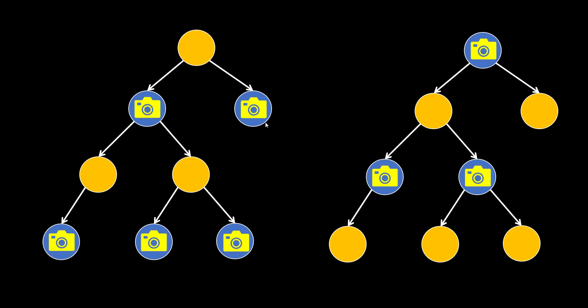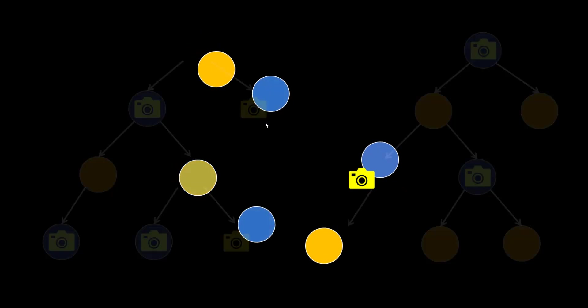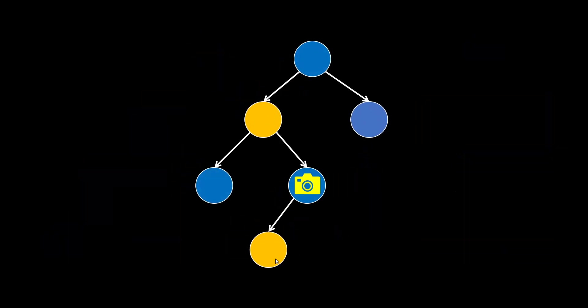Now that we know we are going to start from the bottom, let's see how. We add a camera for a particular node which covers its child and the parent. We need to store somewhere which nodes are being covered by the camera so that we can ignore those nodes in further traversal. With this information, we can minimize the number of cameras needed.